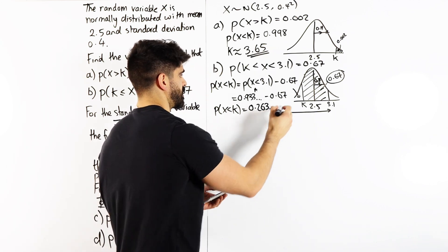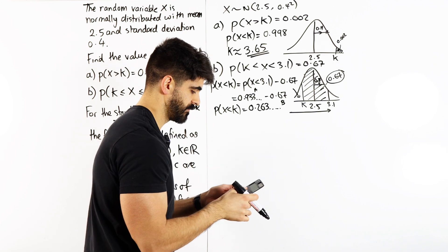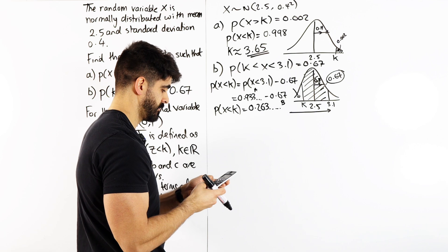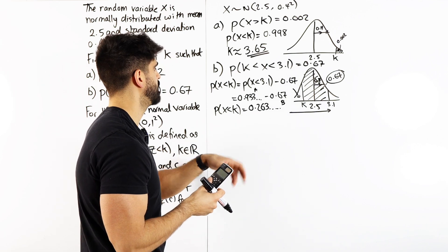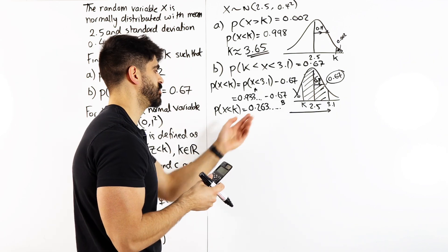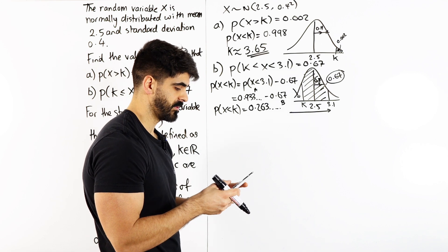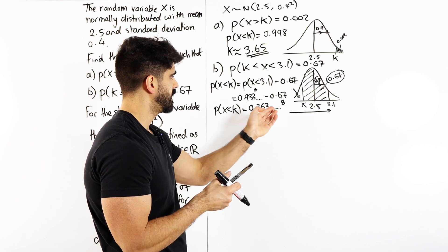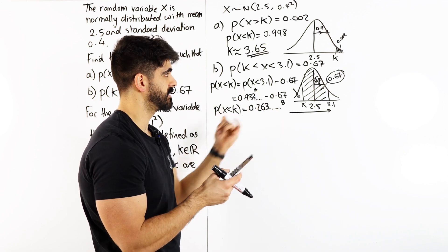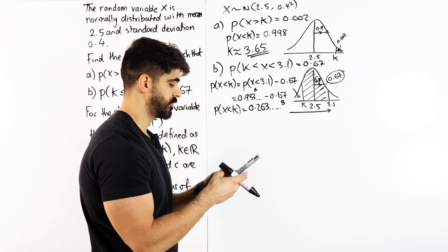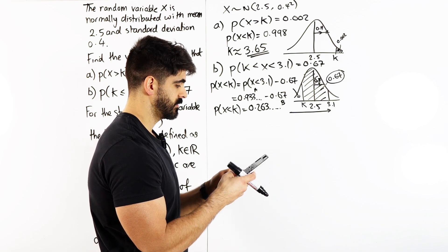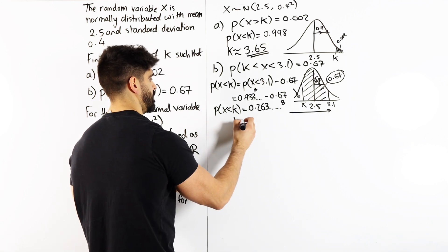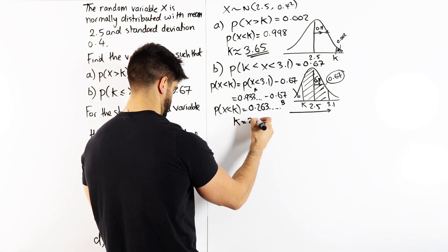I'll store that as B. Now we do the exact same as before — inverse normal. Go menu 7, inverse normal, area = B (which is stored), sigma 0.4, mu 2.5. So k in this case is 2.25. And you can see based on my diagram it makes sense — this is why the diagram is really important, so you can check if your answer makes sense.